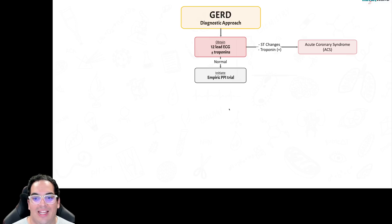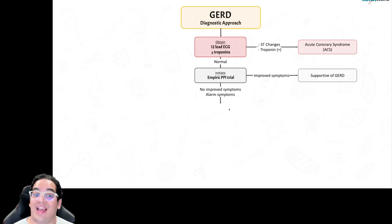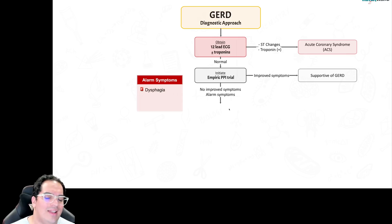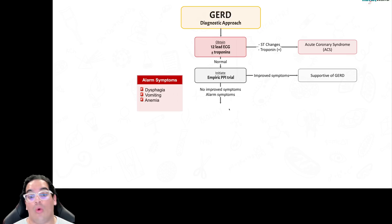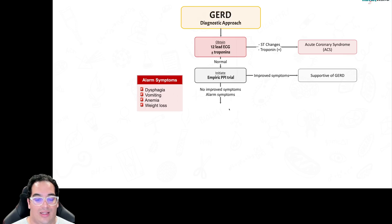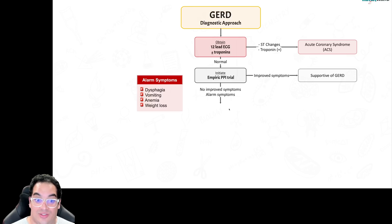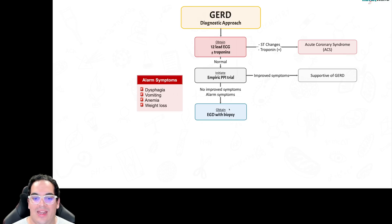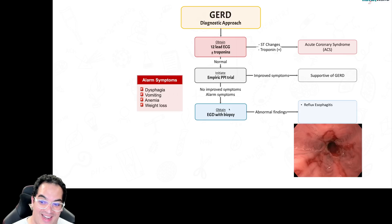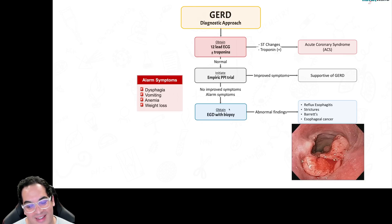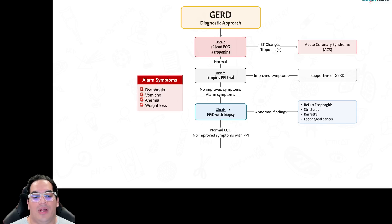If symptoms do not improve, or if they have alarm symptoms — dysphagia from strictures, vomiting, anemia from a GI bleed or esophageal cancer, or weight loss from inability to swallow — you need to rule out complications. Get an EGD with biopsy. Findings may include reflux esophagitis, strictures, Barrett's esophagus, or esophageal cancer, or it may be completely normal.